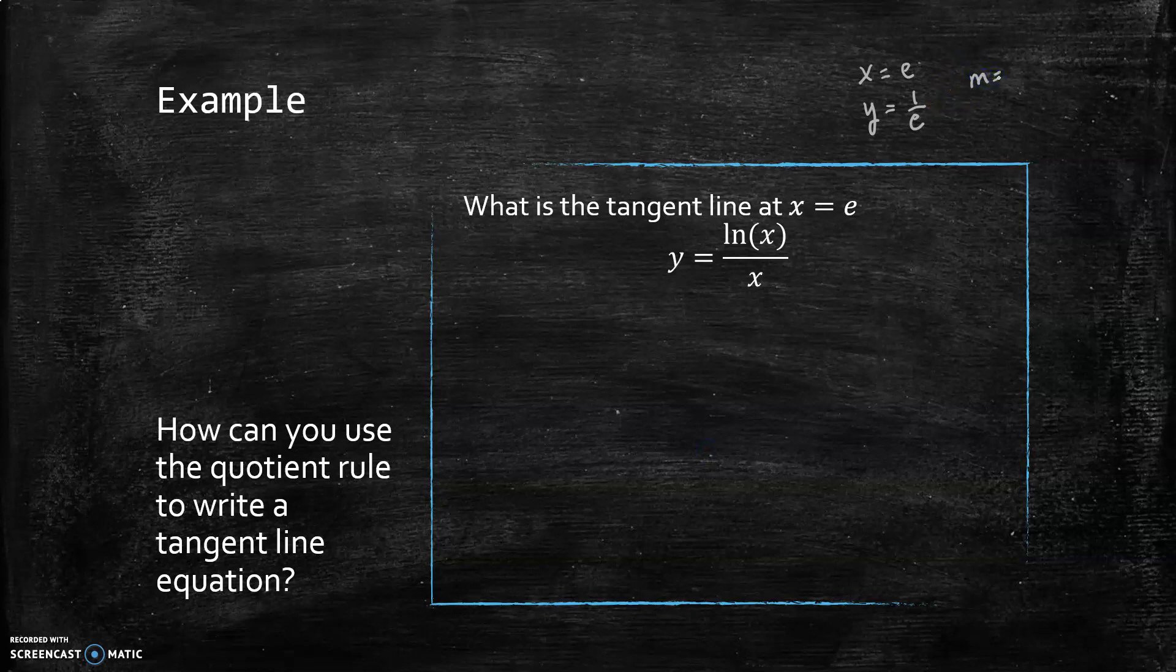The slope is going to be the derivative, so that's my next step. I'm going to take the derivative: low D high minus high D low all over the square of what's below. Actually I'm not even going to worry about simplifying because it's time to plug in e, although I notice these x's cancel, so that makes my life a little easier. So I have (1 - ln(e))/e².